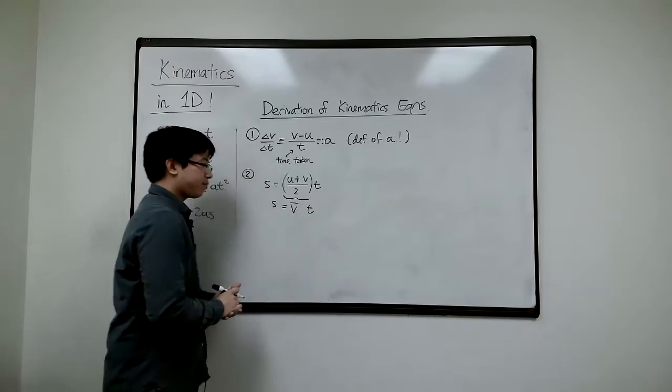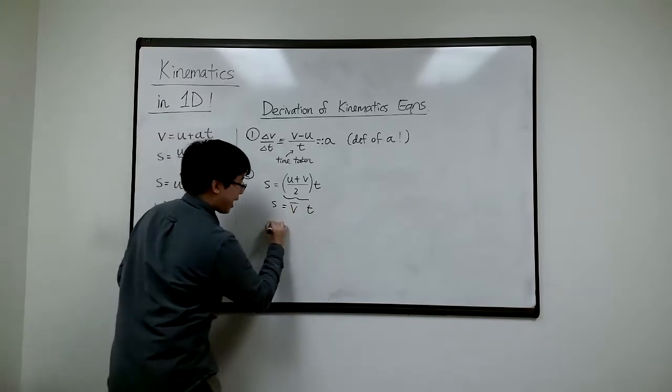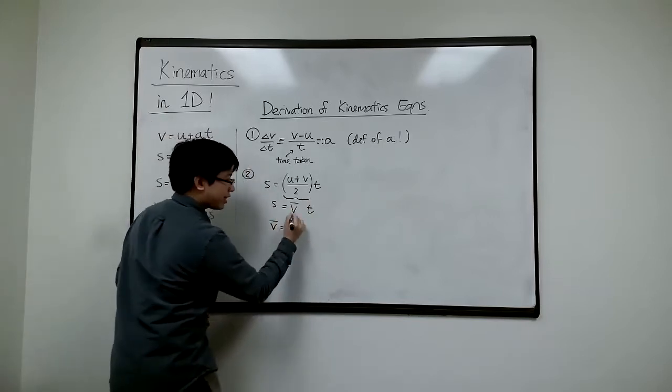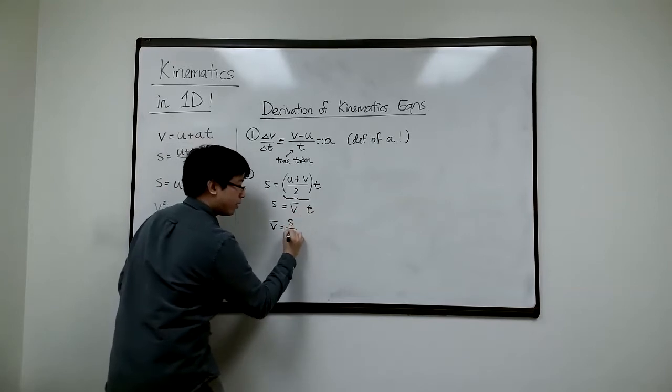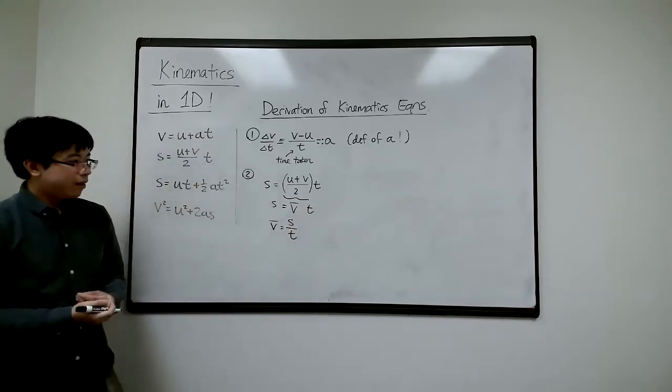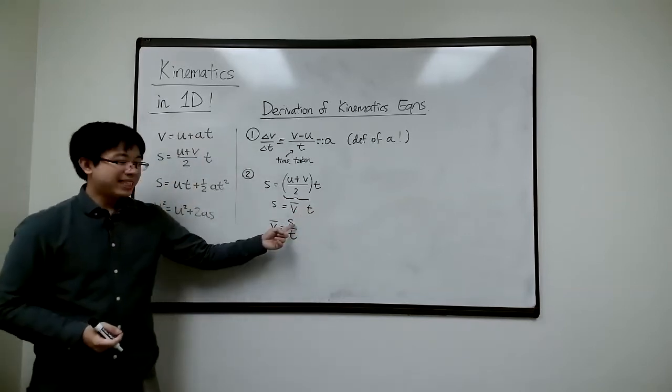So I can write it like this, or I can rearrange that. Now average velocity is S divided by T like that. Well, what does that tell you? Well, what is S again? This is our shorthand.